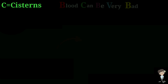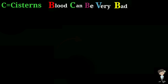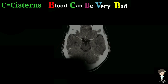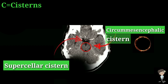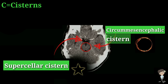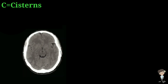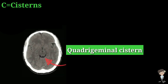The next part of the mnemonic is C, which stands for Cisterns. Cisterns which can be seen include the circumperiphallic cistern, which has a ring-shaped appearance around the midbrain, while the suprasellar cistern has a star-shaped appearance in the circle of Willis.